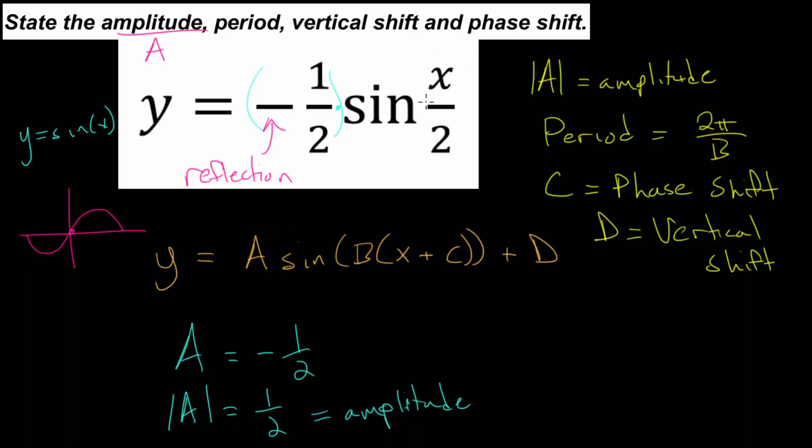And next, we can notice that b, the coefficient on x, would be 1 half. So we can say b is 1 half. And if we plug that into our formula for the period, we can see that the period is 2 pi divided by b, or divided by 1 half. Since we're dividing by a fraction, it's the same as multiplying by this fraction flipped over. So we have 2 pi multiplied by 2 over 1, which is 4 pi. So the period of this is 4 pi.